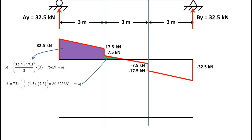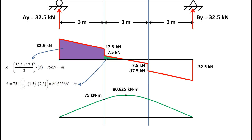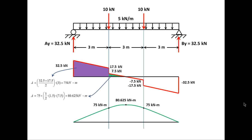Since it's symmetrical about the middle, I won't worry about the moment values after mid span because they repeat. The first value of 75 kilonewton meters will appear again. So the general shape of the moment diagram has values of 75 kilonewton meters at the third-point locations and 80.625 kilonewton meters at the mid span, with 75 kilonewton meters repeated again at the symmetric point.